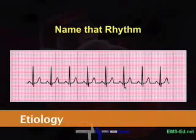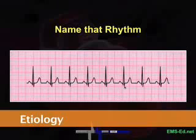Etiology for sinus tachycardia? It results from an increased rate of SA node discharge. Potential causes include exercise, fever, anxiety, hypovolemia, anemia, pump failure, increased sympathetic tone, hypoxia, among other things. In other words, this is a compensatory mechanism.